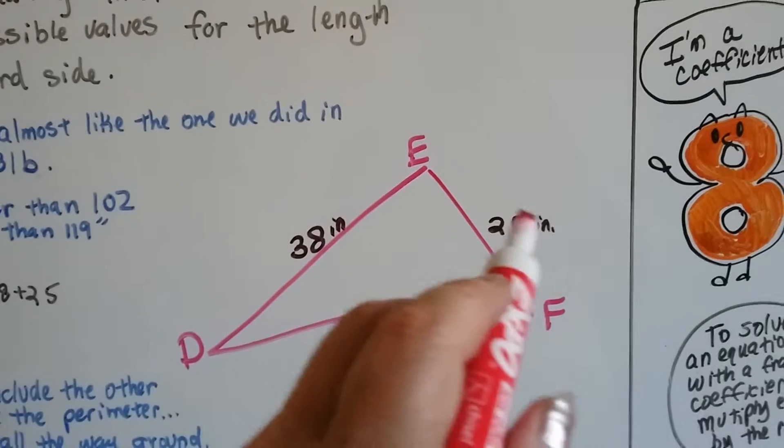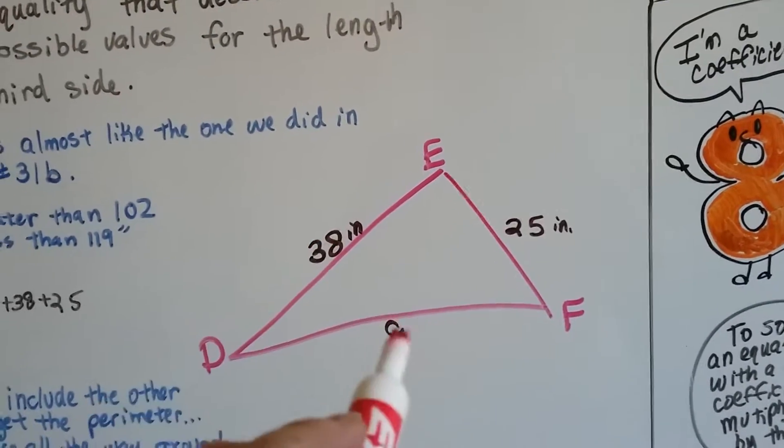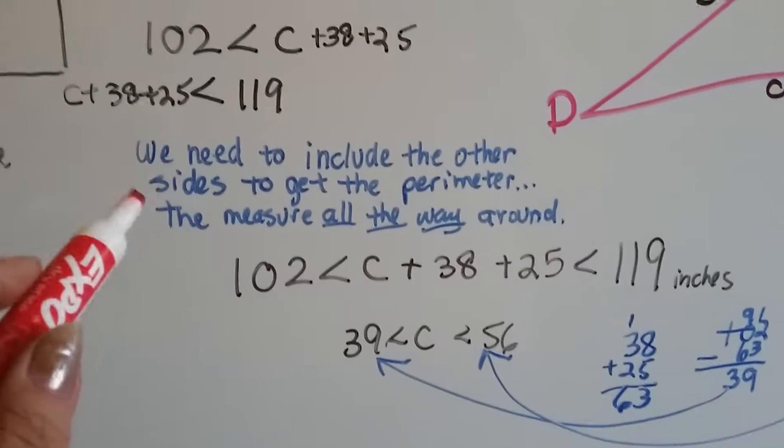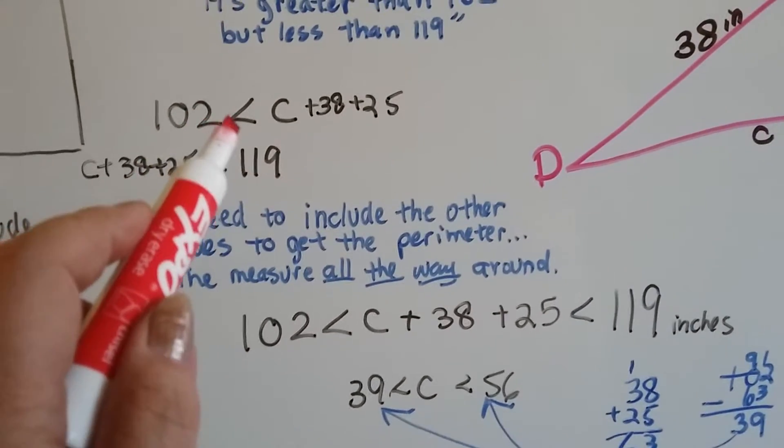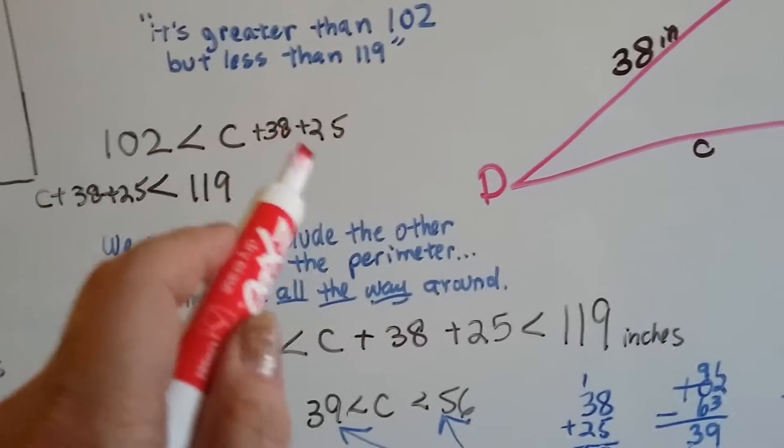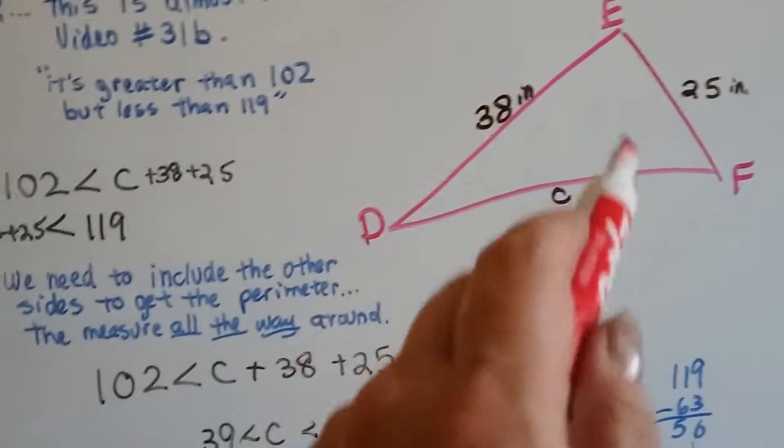So, we need to add these two together, and it'll help us figure that one out. Now, we've got 102 is less than C plus the 38 plus the 25, these three sides.